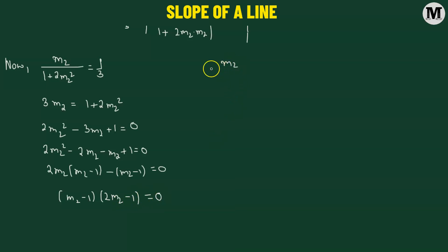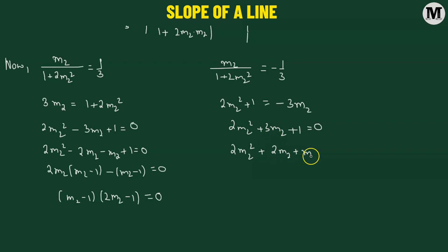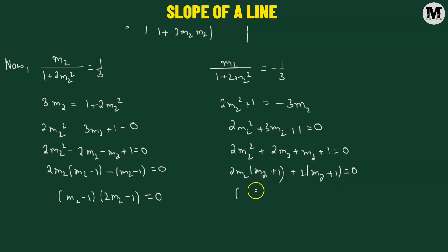For the second equation, m2 divided by 1 plus 2m2 squared equals negative 1 third. Cross-multiplying gives 2m2 squared plus 1 equals negative 3m2, so 2m2 squared plus 3m2 plus 1 equals 0. Factorizing: 2m2 squared plus 2m2 plus m2 plus 1, which gives 2m2 times (m2 plus 1) plus 1 times (m2 plus 1) equals 0, so (m2 plus 1)(2m2 plus 1) equals 0.